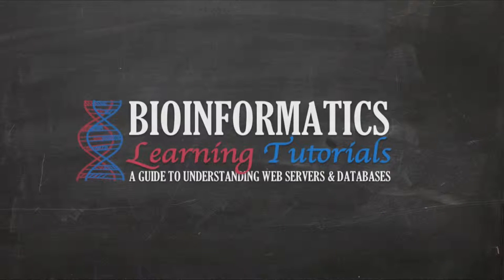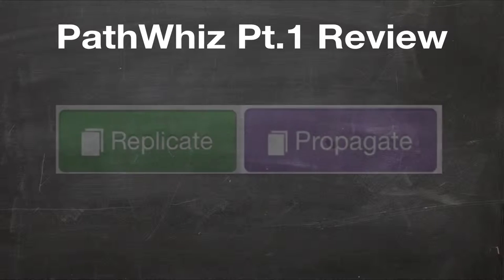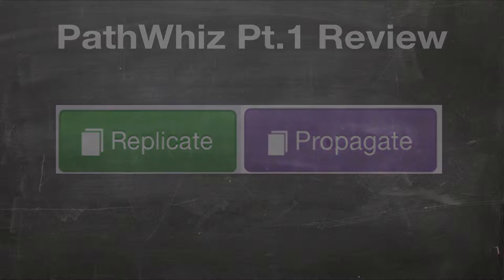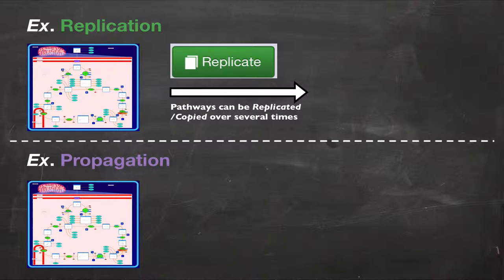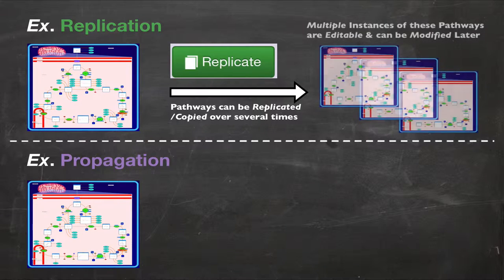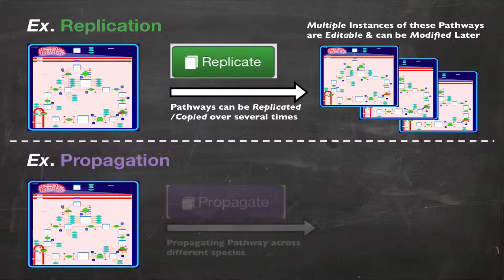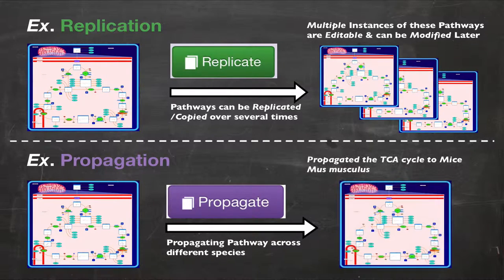Now let's get started with the tutorial. As you may recall in part 1 of the PathWiz series, the replication and propagation functions allow PathWiz users to expedite the pathway creation process. The replication function allows an already existing PathWiz pathway to be copied or replicated so that it can be altered or modified in any way you desire. The propagation function, on the other hand, allows an existing PathWiz pathway to be propagated across other species.